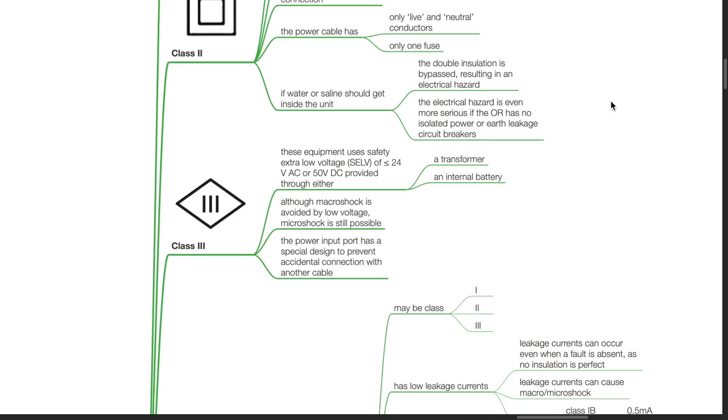Class 3 equipment uses safety extra low voltage of 24V or less for AC or 50V DC provided through either a transformer or internal battery. Although macroshock is avoided by low voltage, microshock is still possible. The power input port has a special design to prevent accidental connection with another cable.